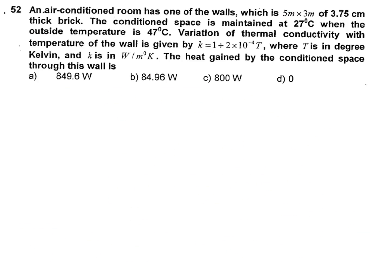Next: an air-conditioned room has one wall which is 5 m by 3 m and 3.75 cm thick brick. The conditioned space is maintained at 27°C and the outside temperature is 47°C. The variation of thermal conductivity with temperature is given by K = 1 + 2×10⁻⁴·T, where T is in Kelvin and K is in W/m·K. Find the heat gained by the conditioned space through this wall.